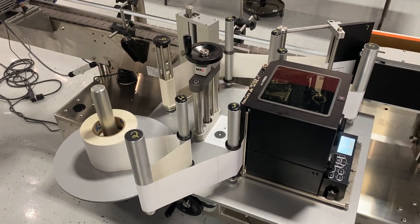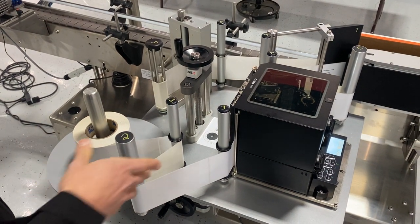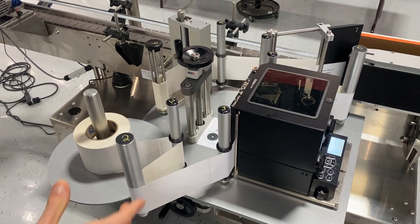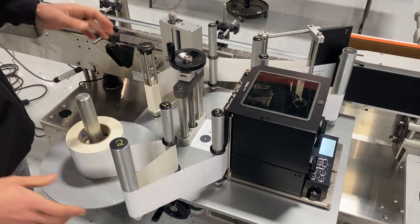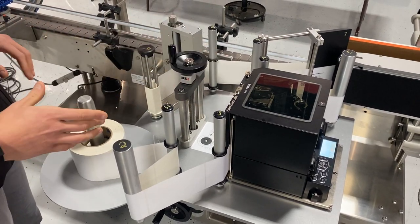All right, so now we're going to review webbing of the label applicator. As you can see, I'm already webbed up. Let's say I want to change over or my liner broke or something like that and I have to re-web this printer.